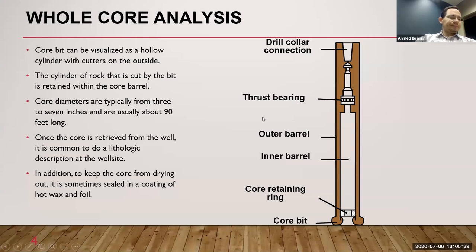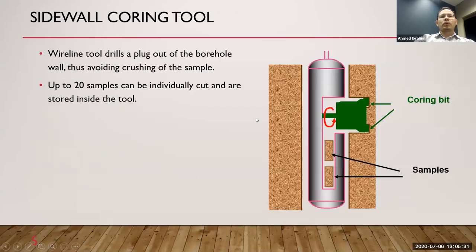Once we get the core from the barrel at the surface, we have to coat it with hot wax to avoid drying of the fluid inside. We can do some lithological analysis at the wall side and give a description of the mineralogy for the formation. Another technique is the sidewall coring tool.